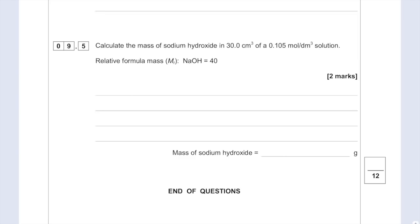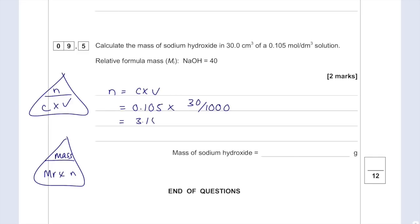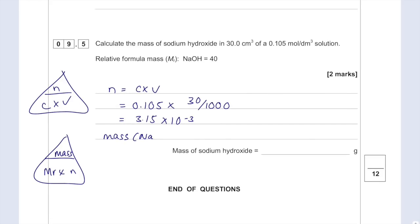Calculate the mass of sodium hydroxide in 30 cm³ of a 0.105 mol/dm³ solution. Mass is MR times number of moles. Number of moles is concentration times volume. The concentration is 0.105, the volume is 30 ÷ 1000. So moles = 0.105 × 0.03 = 3.15 × 10⁻³. The MR of sodium hydroxide is 40. Mass = MR × moles = 40 × 3.15 × 10⁻³ = 0.126 grams.